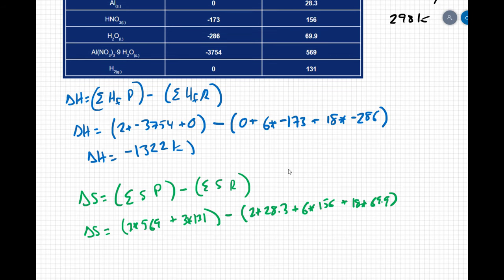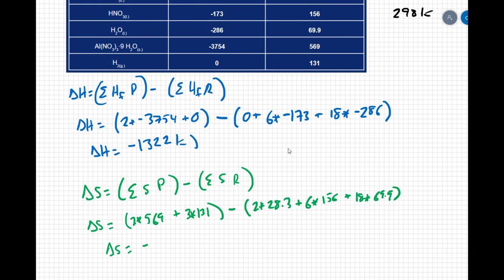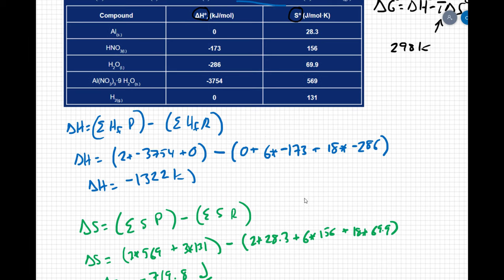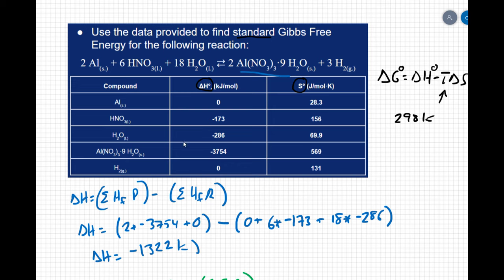I get for a delta S value negative 719.8 and those units are going to be joules over kelvin. Now let's take a look at these values make sure they make sense. My delta H value is claiming that this is an exothermic process. When you combine the aluminum the hydrogen nitrate and the water you're going to release heat, which seems reasonable to me.